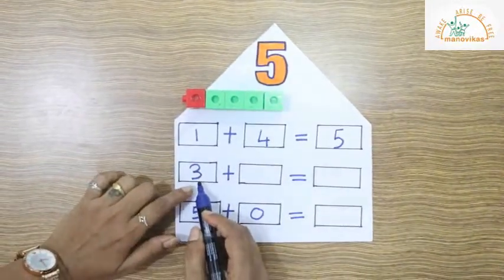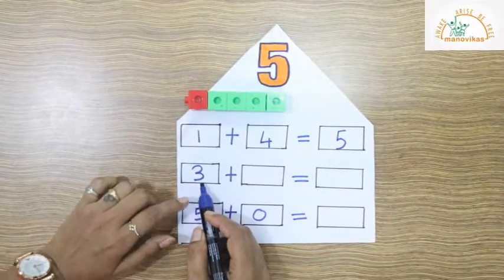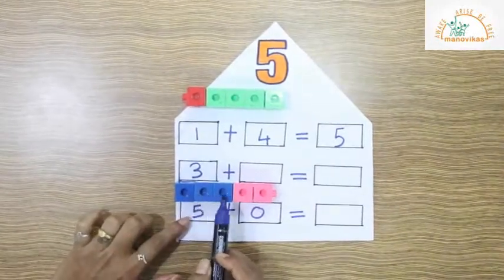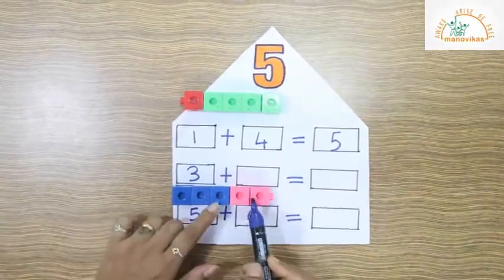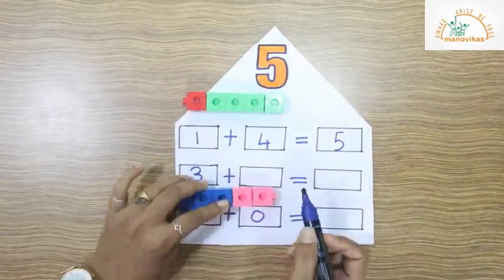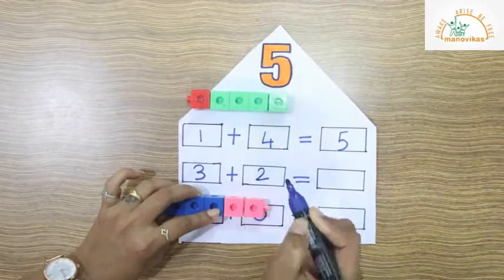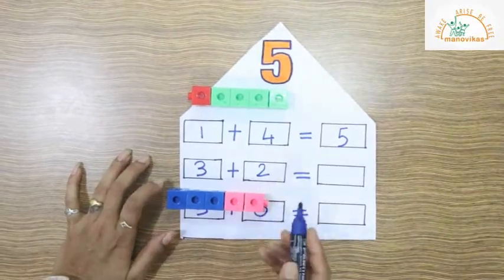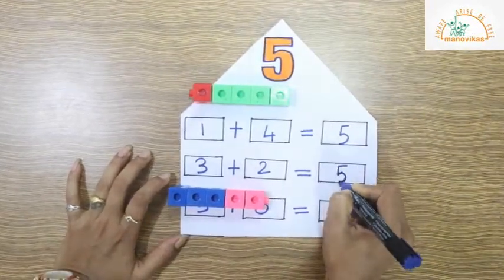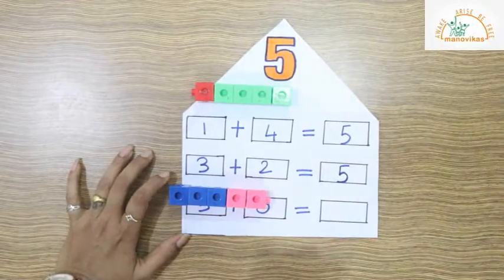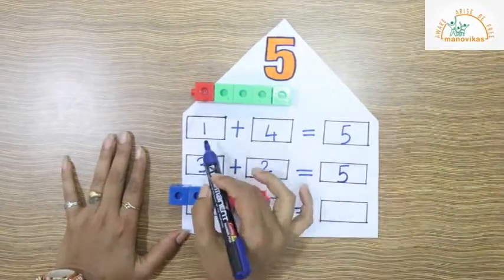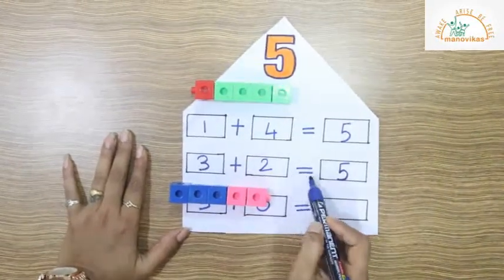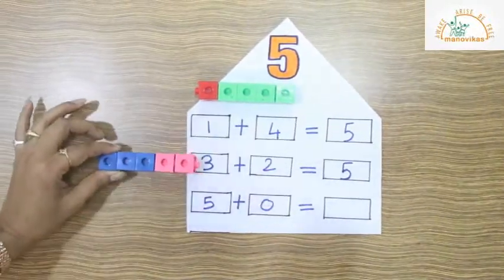Now the next example is 3 plus 2. Let's count the cubes: 1, 2, 3. And how many cubes in a different color? 1, 2. Now let's count all together: 1, 2, 3, 4, 5. So there are 5 cubes all together. So 1 plus 4 equals 5, and 3 plus 2 is equal to 5.